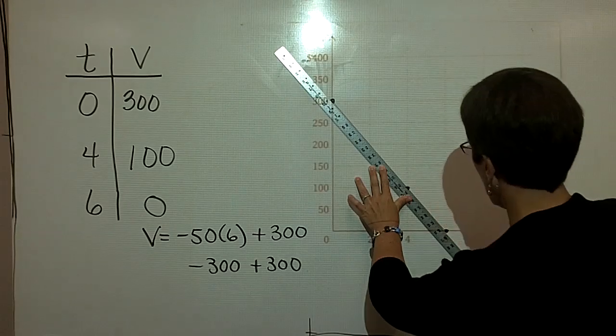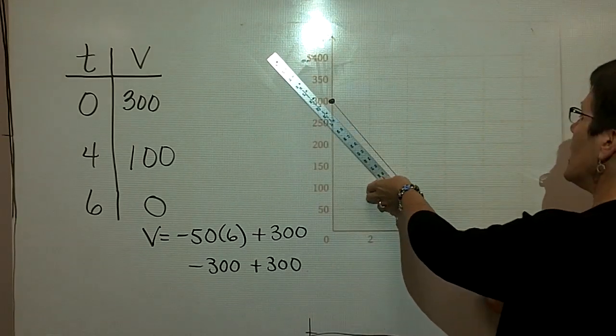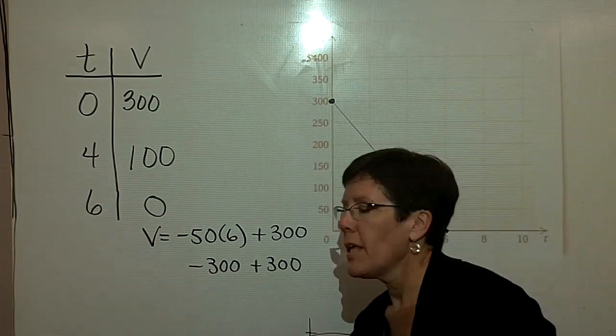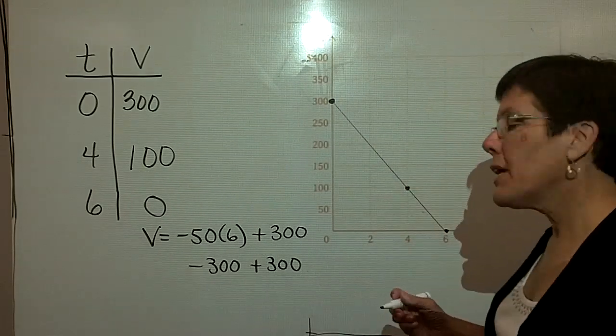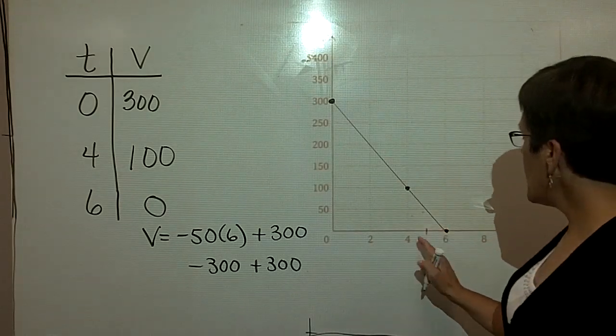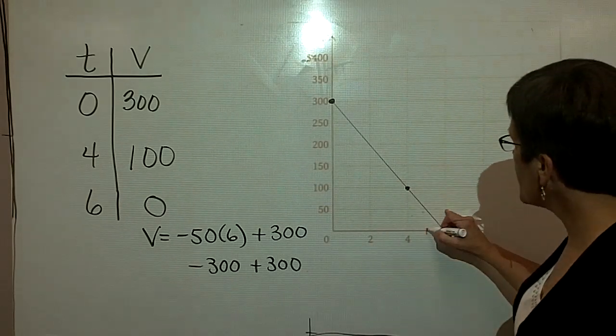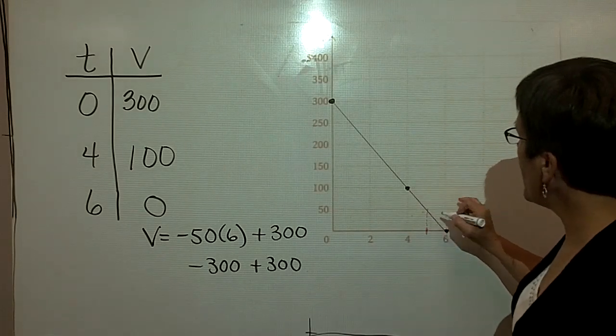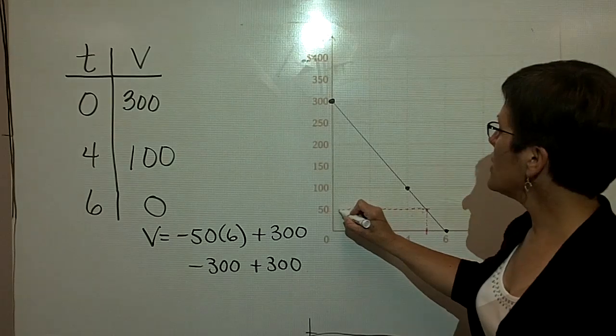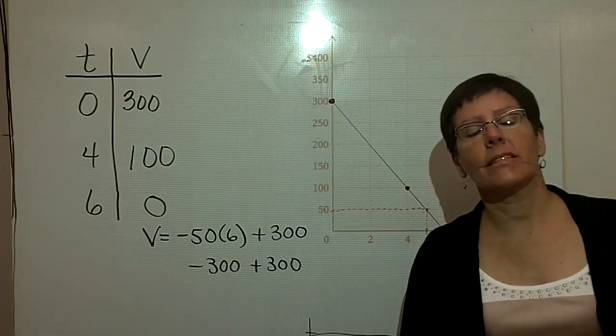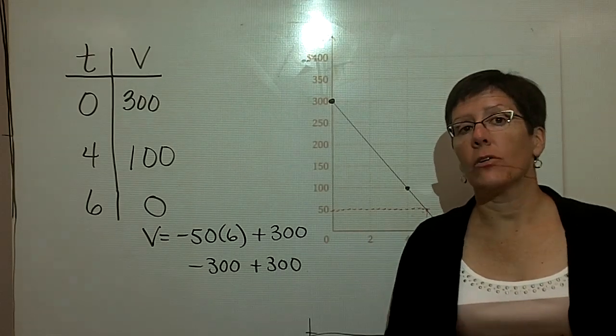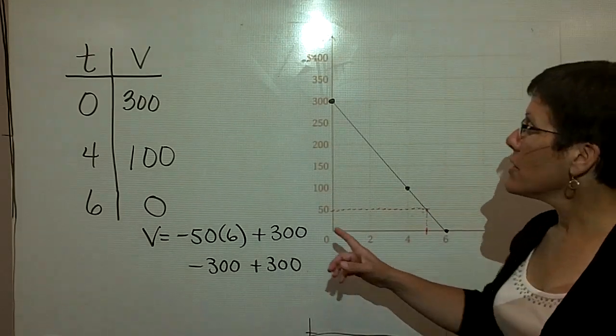And then finally, try to remember, please, that this problem asked us to estimate the value of the software at five years. So I would go right here, because this is between four and six, or five years. And I would go up to my line and go over here and look and estimate and see what I think that value for y would be. It appears to me that the value of the software would be $50 after five years.